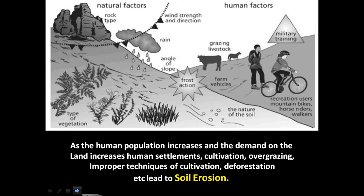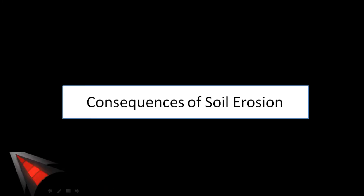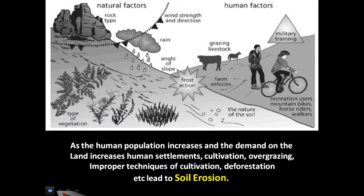Other types of soil erosion include wind erosion, where wind strength and direction create a powerful agent blowing away fine particles of sand and depositing them in other areas, rendering both areas unproductive. Human population also increases the demand on the land through increased settlements, cultivation, overgrazing, improper techniques of cultivation, and deforestation, all leading to soil erosion. This kind of erosion is seen in the Western Ghats, Chhotanagpur Plateau, Shivalik Hills, northeast hill states, Telangana Plateau, and Malwa Plateau region.